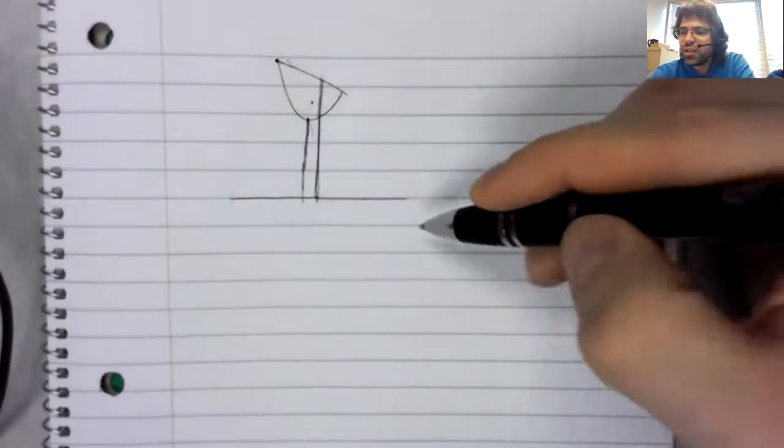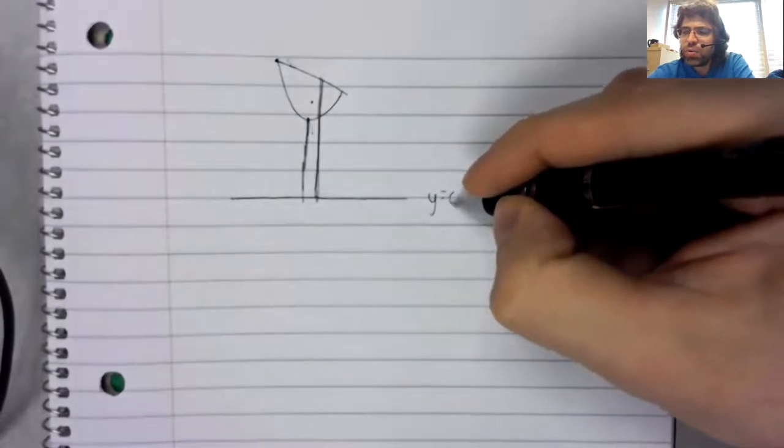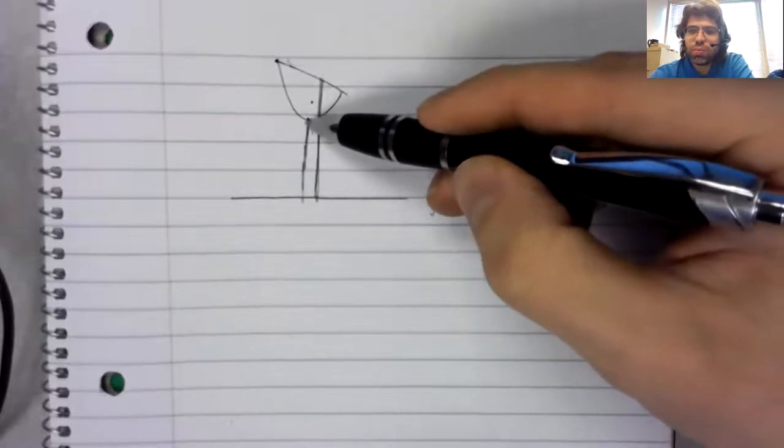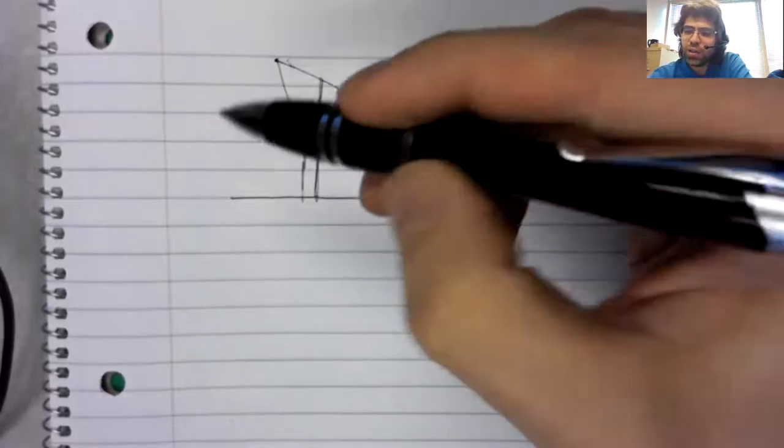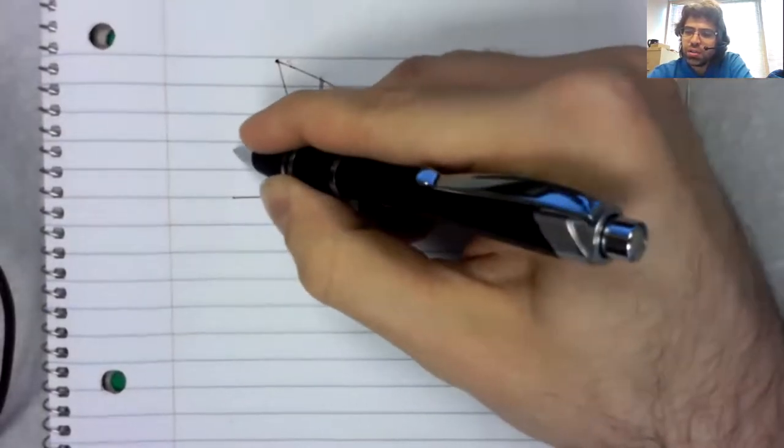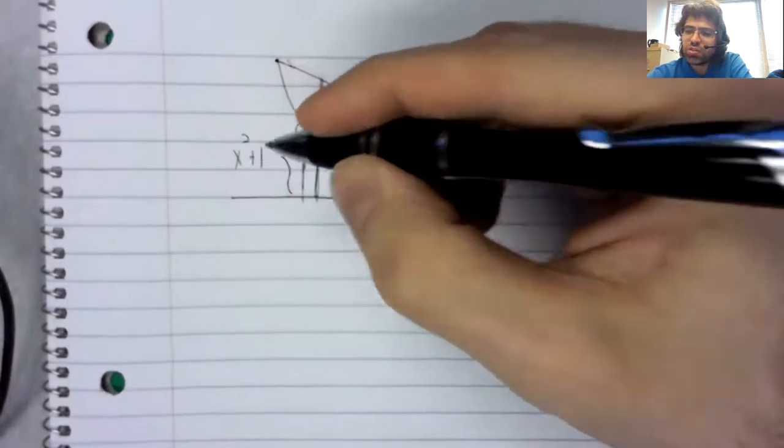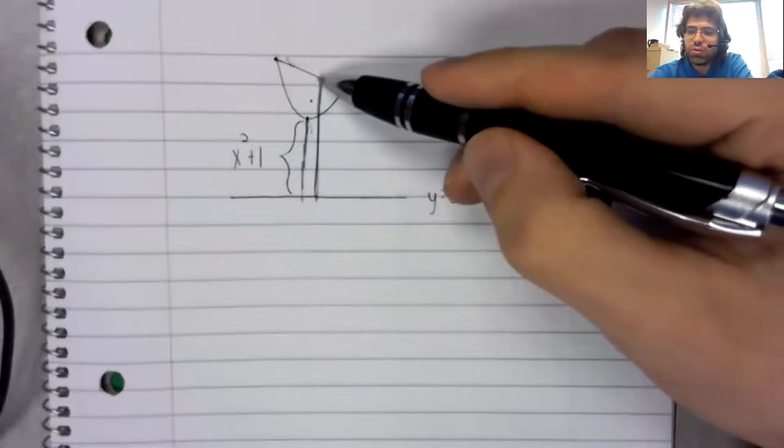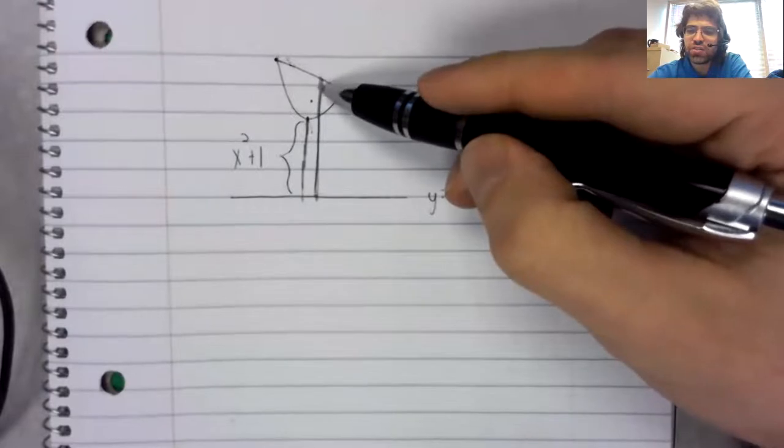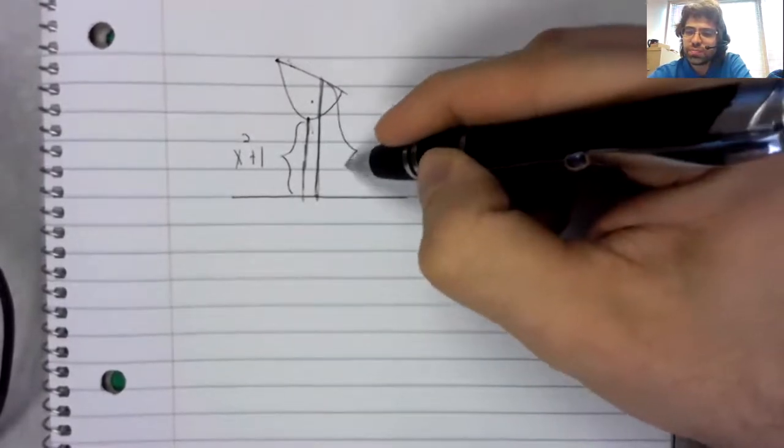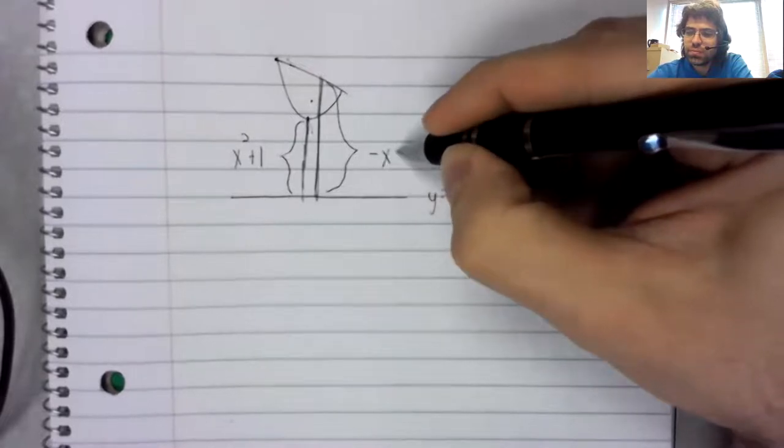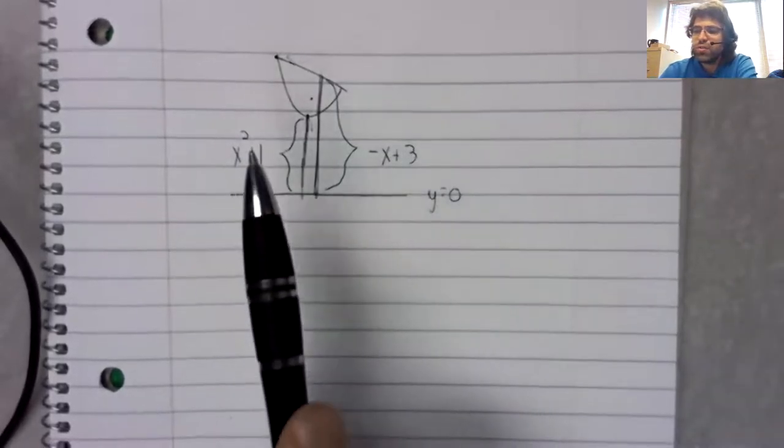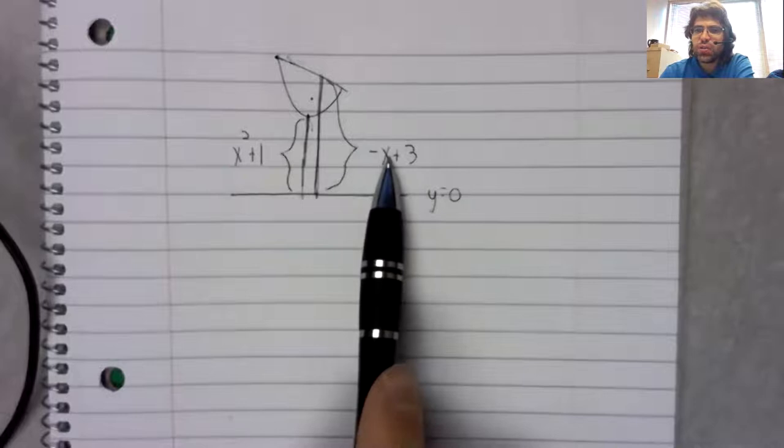And this is y equals 0. The distance from y equals 0 to y equals x squared plus 1 is x squared plus 1. And the distance from y equals 0 to y equals negative x plus 3 is negative x plus 3. So you've got an inner radius and an outer radius.